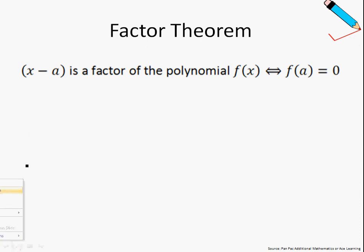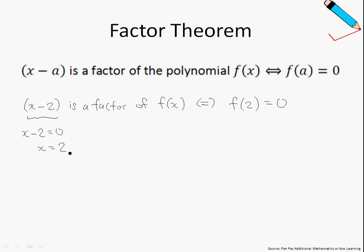Let me give you a numerical example to help you understand better. So for example, if x-2 is a factor of f(x), then we can also say that f(2) is equal to 0. Once again, let us recall how we arrived at 2. So all we need to do is to equate this to 0 and then solve for x, which is just 2. And therefore, f(2) is 0.